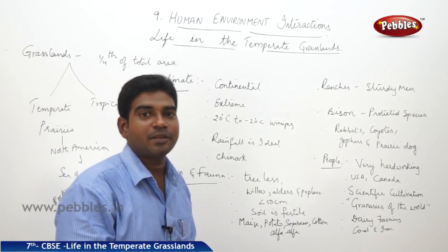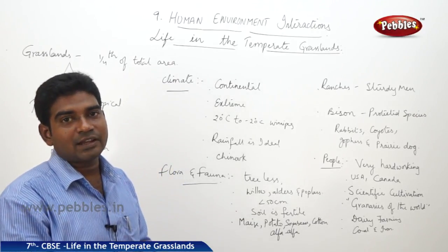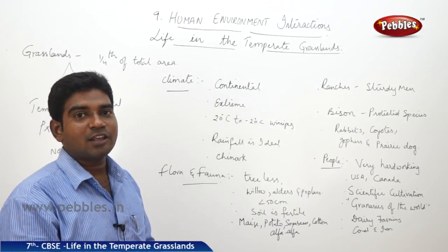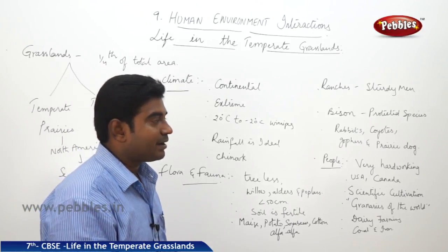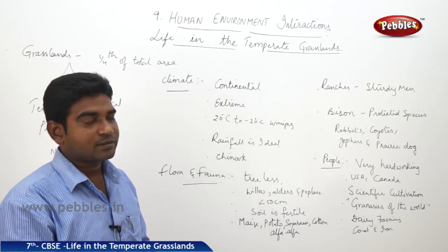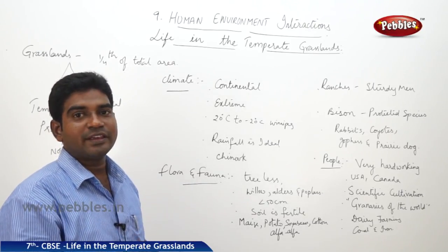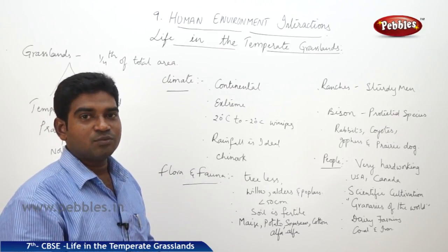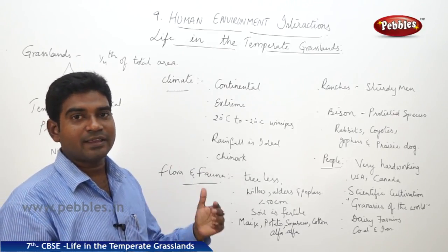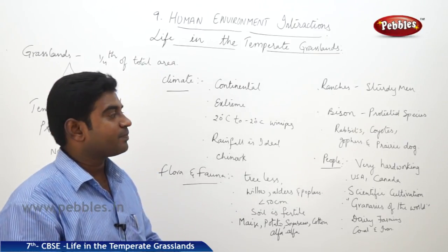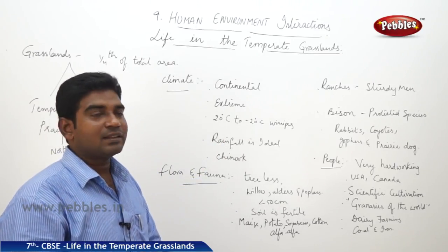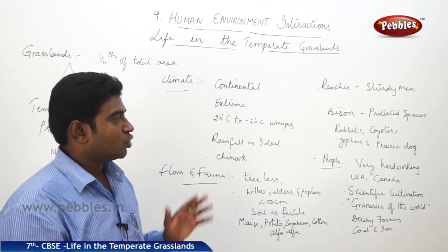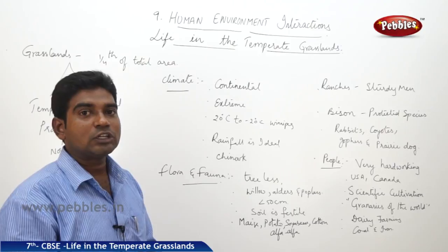Coming to the commercial activities — they maintain large cattle farms known as ranches. These are taken care of by sturdy men known as cowboys, which we might have observed in English movies. We also have bison, which are now becoming rare due to hunting and poaching and are now becoming protected species. Other animals include rabbits, coyotes, gophers, and the prairie dog.